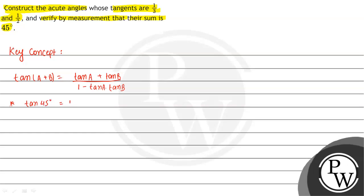The question gives two acute angles whose tangents are 1/3 and 1/2. So we have to assume two angles, alpha and beta. According to the question, tan alpha value is 1/3 and tan beta value is 1/2. We have to prove that alpha plus beta is 45 degrees.